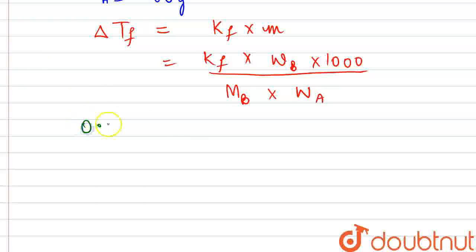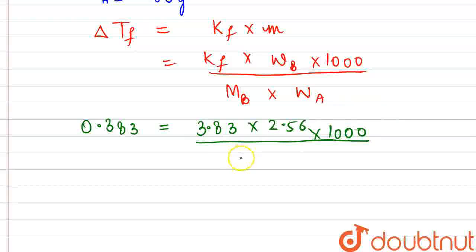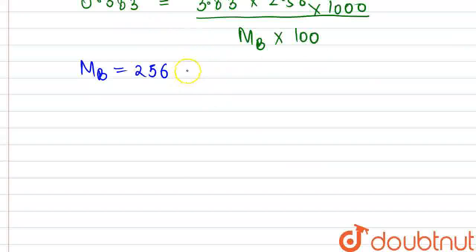Now putting on the respective values, depression in freezing point is 0.383 given to us and Kf is also given in the question. Wb will be 2.56 into 1000 and divided by molecular mass here for the B is what we will be calculating and weight of carbon disulfide is 100 grams given to us. From here on solving MB, that comes out to be 256 gram per mole, the molecular mass or molar mass that we have calculated.